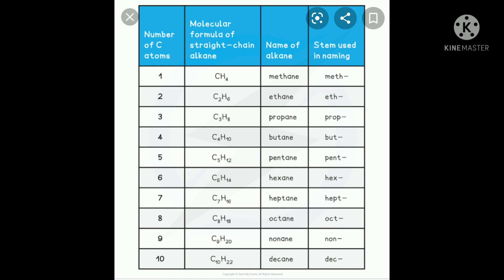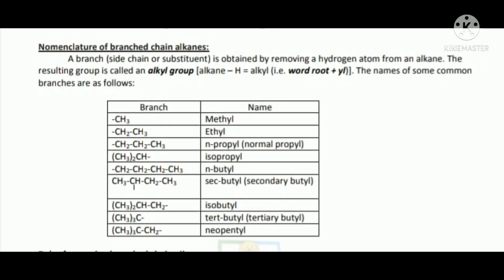Now we discuss the nomenclature of branched chain alkanes. In alkanes, carbon-carbon single bonds are present. A branch is obtained by removing a hydrogen atom from an alkane; the resulting group is called an alkyl group.